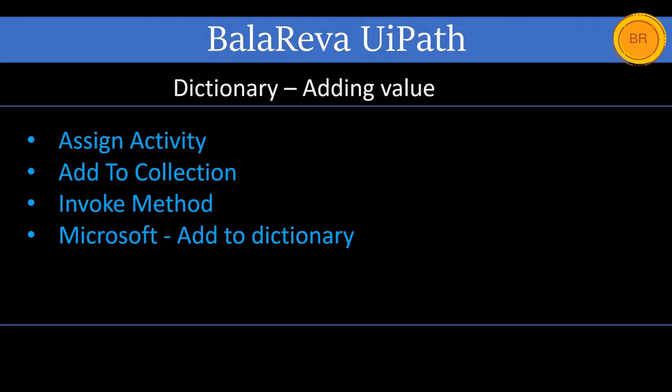There are many ways to add values into the dictionary, but here we are going to see using assign activity, add to collection, invoke method, and finally using a Microsoft activity — add to dictionary. Let us go to the first one.